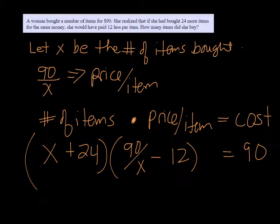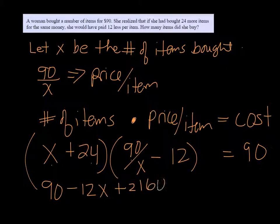From here we can foil it out and it'll turn into a quadratic equation eventually. So let's foil it. X times 90 over X is just 90. X times negative 12 is minus 12X. 24 times 90 over X is positive 2160 over X, and 24 times negative 12 is minus 288.